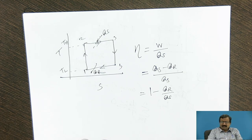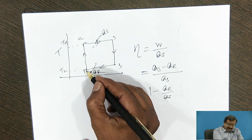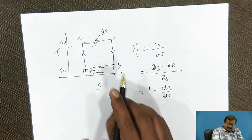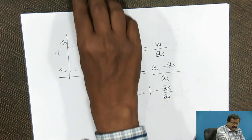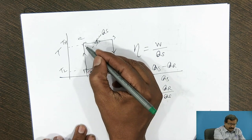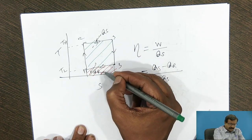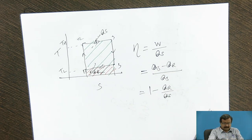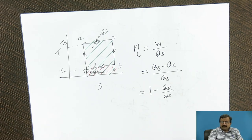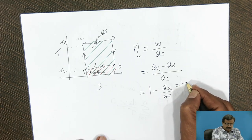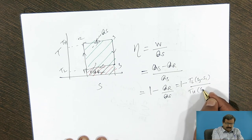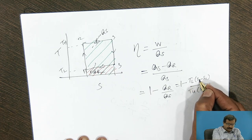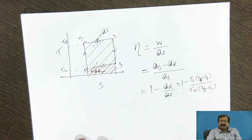Now, Carnot cycle is the reversible cycle. So on the TS diagram, I can have heat supplied in the form of area under the curve. What is the heat rejected? It is the area under this curve. So this shaded area will represent the heat rejected. And the green area will represent the heat supplied. Now, heat rejected is a perfect rectangle. So area of the rectangle, it is equal to 1 minus the lowest temperature TL into S3 minus S1, divided by TH into S4 minus S1, and this is S3 minus S2.